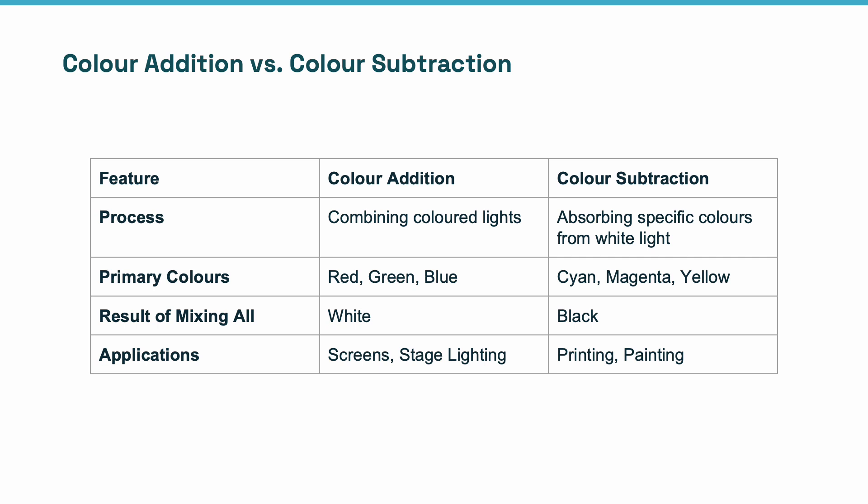Color addition versus subtraction. The process in color addition is to combine colored lights. In color subtraction, the process is to absorb specific colors from white light. Primary colors in color addition are R, G and B: red, green, blue. In color subtraction, cyan, magenta and yellow are the primary colors. If you mix R, G and B, you get white. If you mix C, M and Y, you get black. Color addition is used in screens, computer screens, mobile screens, projectors, stage lighting. Color subtraction is used in printing and painting.